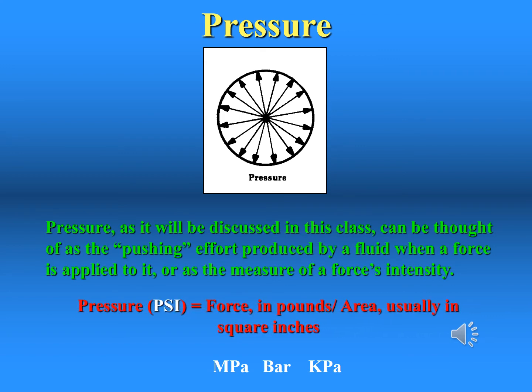Pressure is defined as force per unit area. It is usually more convenient to use pressure rather than force to describe the influence upon fluid behavior. The standard unit for pressure is psi, which stands for pounds per square inch — a pound of force divided over an area of one square inch. In the SI system, the standard unit is the pascal, which is a newton per square meter.